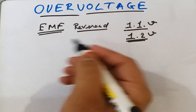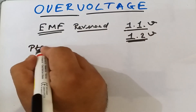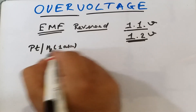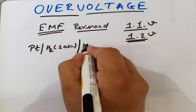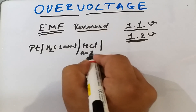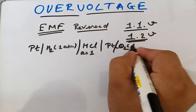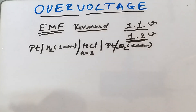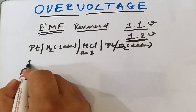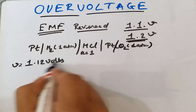Consider one more example: a cell made up of a hydrogen half-cell wherein hydrogen gas is bubbled at one atmosphere, dipped in an HCl solution whose activity is unity, and on the other electrode, oxygen gas is bubbled at one atmosphere. The voltage of this cell is around 1.12 volts.